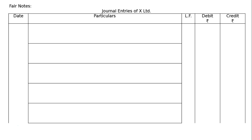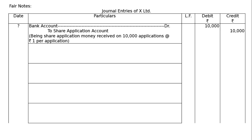First entry: Bank Account debited to Share Application Account. Being share application money received on 10,000 applications at the rate of Re 1 per application. That is 10,000 × 1 = Rs 10,000 on both debit and credit.